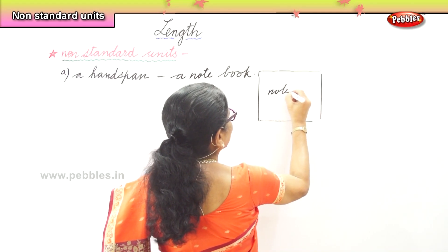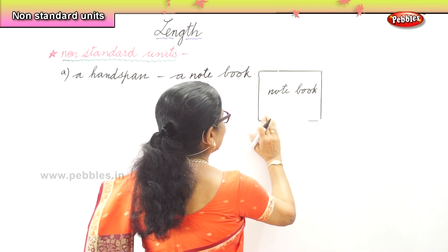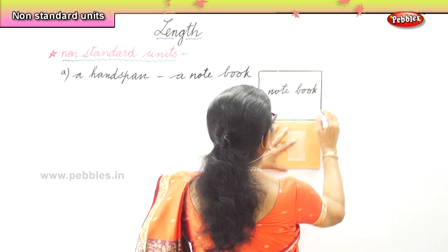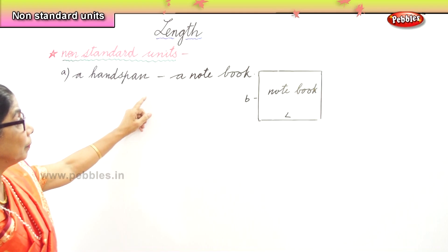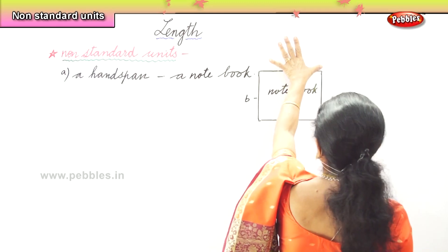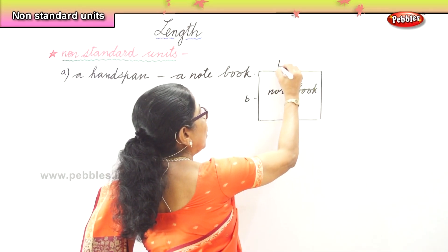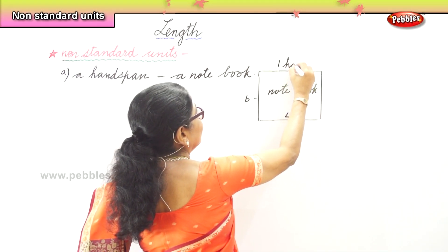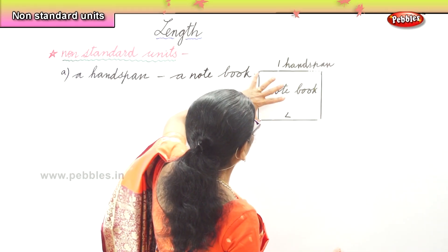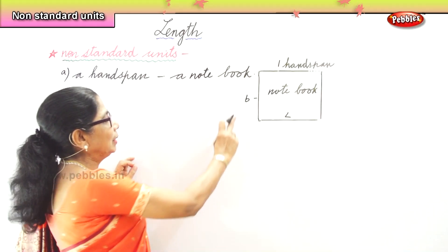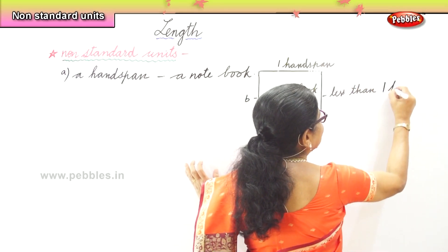Here is the notebook — I am tracing it for you so that we do it perfectly. This is the length and this is the breadth of the notebook. Now a hand span — we put our hand on one edge to the other edge. We will say: the length of the notebook is one hand span.